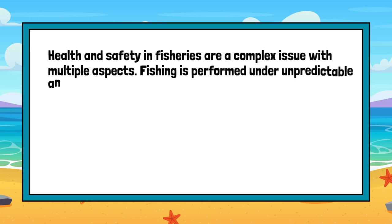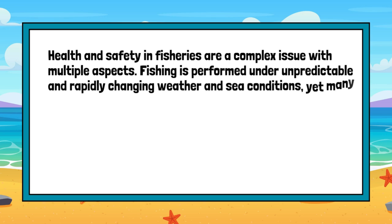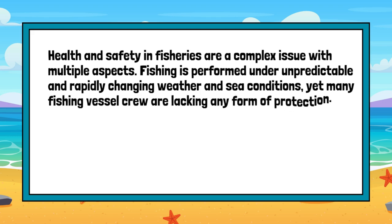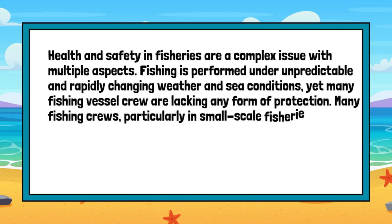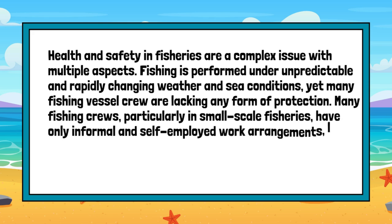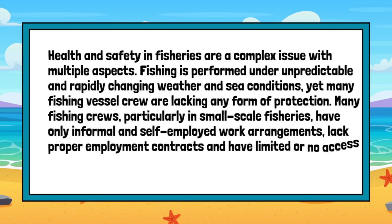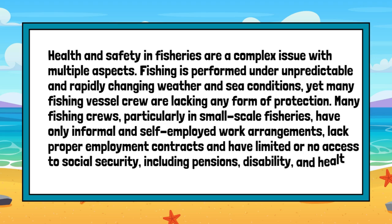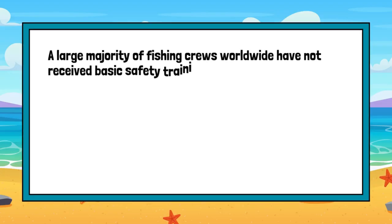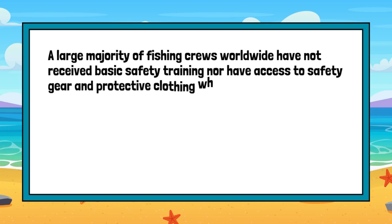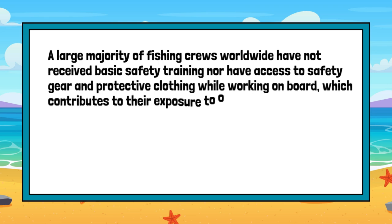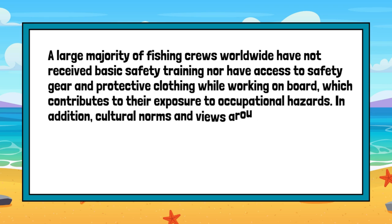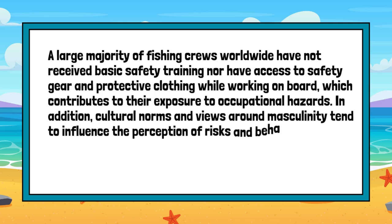Fishing is performed under unpredictable and rapidly changing weather and sea conditions, yet many fishing vessel crew are lacking any form of protection. Many fishing crews, particularly in small-scale fisheries, have only informal and self-employed work arrangements, lack proper employment contracts, and have limited or no access to social security, including pensions, disability, and health insurance. A large majority of fishing crews worldwide have not received basic safety training nor have access to safety gear and protective clothing while working on board, which contributes to their exposure to occupational hazards. In addition, cultural norms and views around masculinity tend to influence the perception of risks and behavior of fishers.